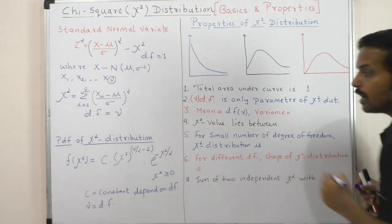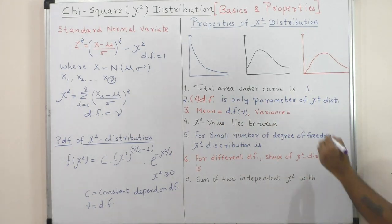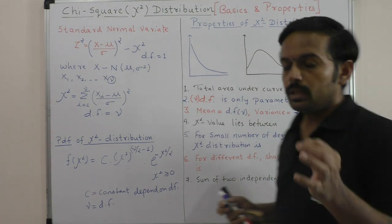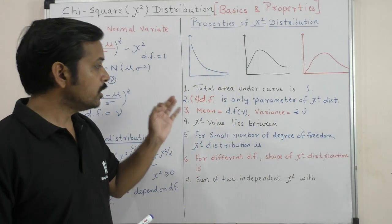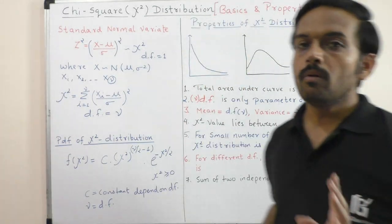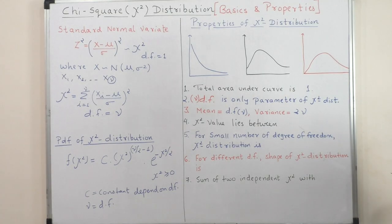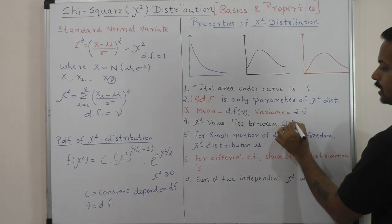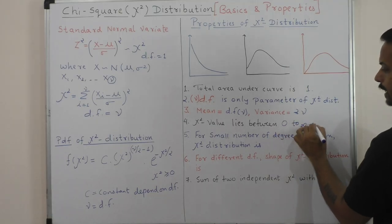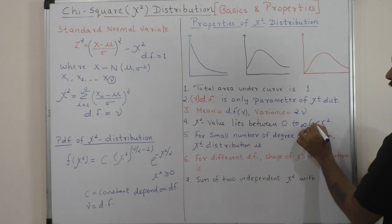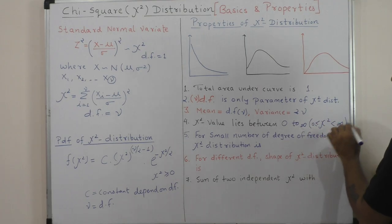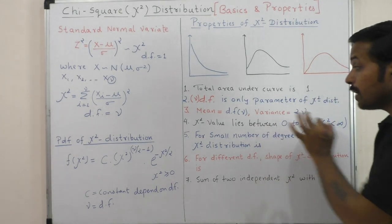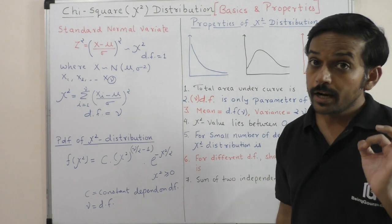The mean of chi-square distribution is nu (degree of freedom), and the variance is 2 times nu (2ν). If the degree of freedom is denoted by n in your textbook, use n accordingly. Another property: the chi-square value is always non-negative — it is always greater than or equal to zero, meaning it is positive.